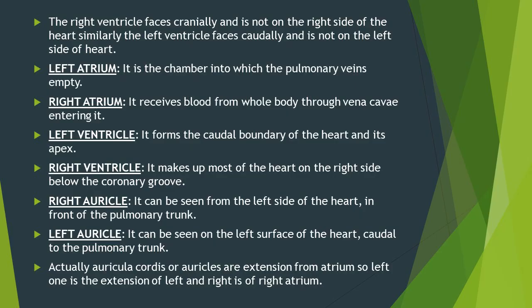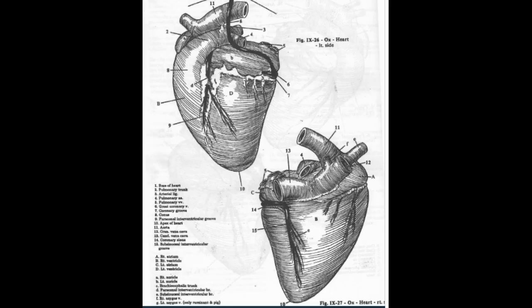The heart has four chambers: the right atrium, right ventricle, left atrium, and left ventricle. The ventricles are not positioned on the right or left side of the heart; instead, the right ventricle faces cranially and the left ventricle faces caudally.